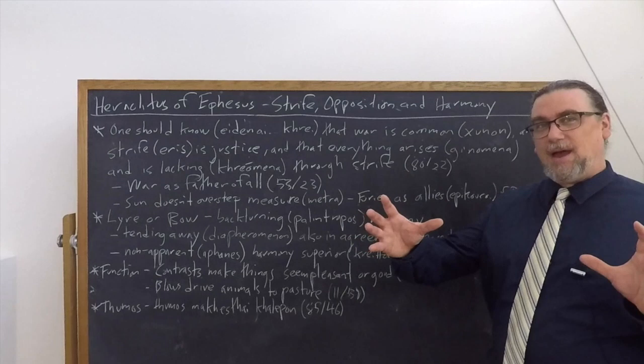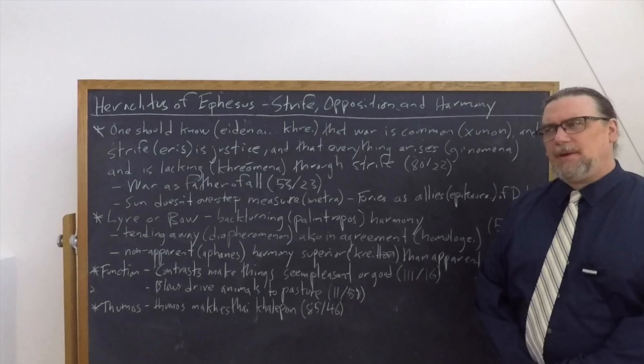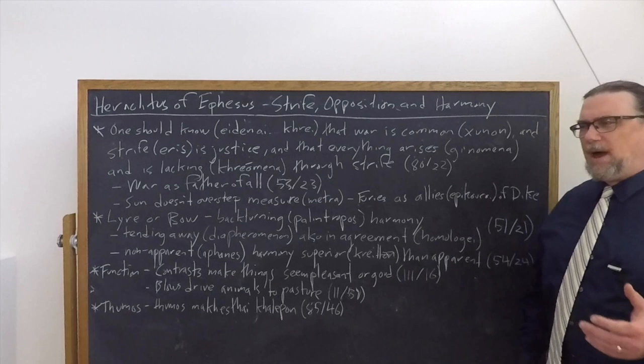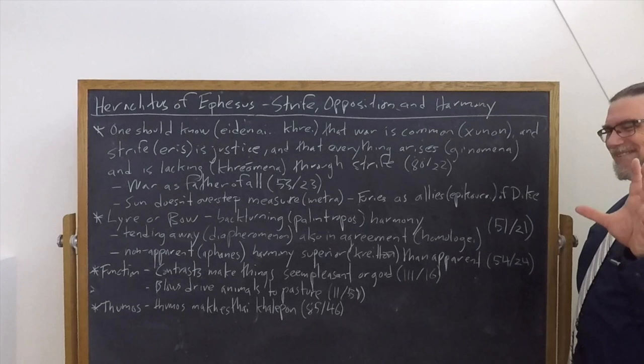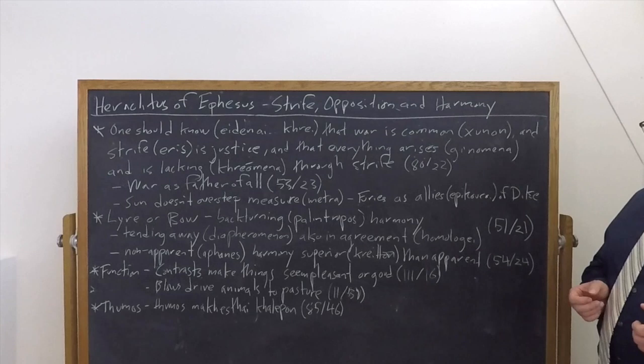So he says that war is common. Common not in the sense of something that we commonly run across, but xunon here, which is kind of an old-fashioned term by the time that we get to more modern Greek writers, and by modern I mean more ancient but less ancient than Heraclitus, it's something that binds things together. So to say that it's common doesn't just refer to its ubiquity, it refers to the fact that it is something that peoples have in common.